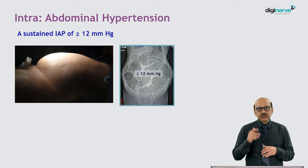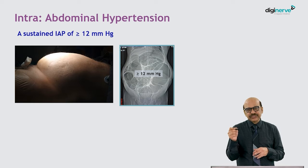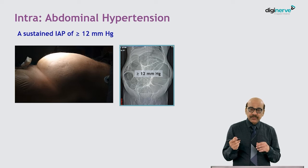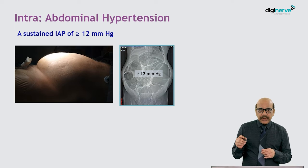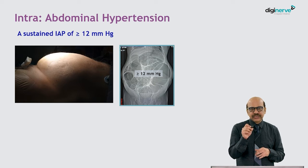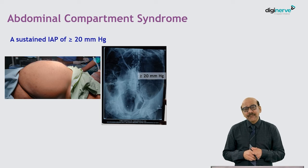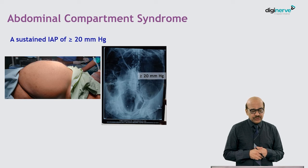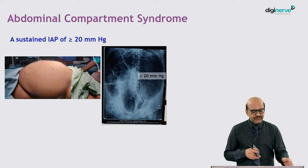Intra-abdominal hypertension is defined as a sustained intra-abdominal pressure of 12 mmHg and above. Some authorities define it as 10 mmHg and above. Remember, normal pressure is between 0 and 5 mmHg, and intra-abdominal hypertension is defined as 10 or 12 mmHg and above. Abdominal compartment syndrome, on the other hand, is where sustained pressure is above 20 mmHg.